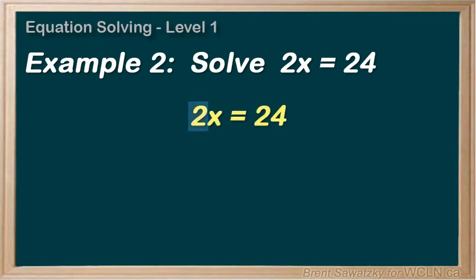And the opposite of multiplying by 2 is dividing by 2. So to keep things equal and legitimate, whatever we do to the left, we also do to the right. So we divide both sides by 2 and draw the line.